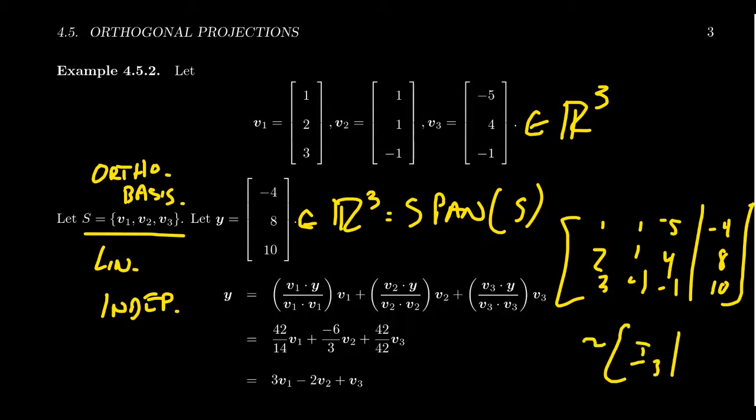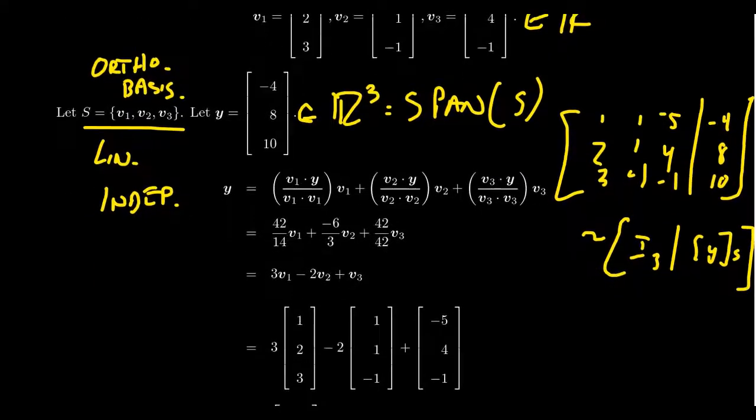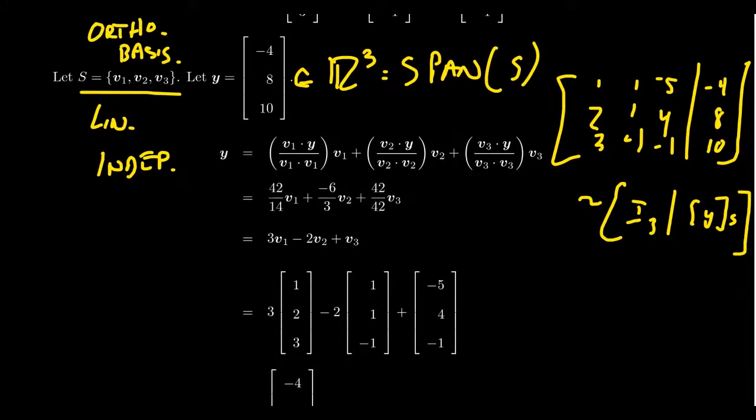Get the identity, and you get, well, you'd get the coordinate vector of Y with respect to S coordinates. This is what we could do. That's sort of the old way of doing it.